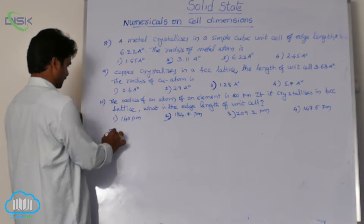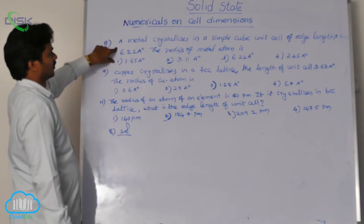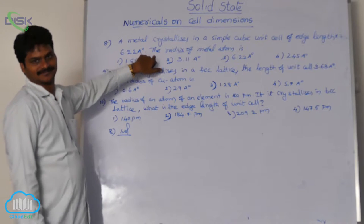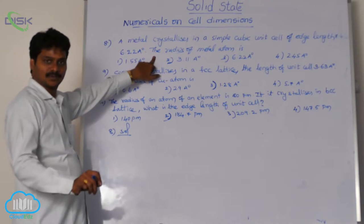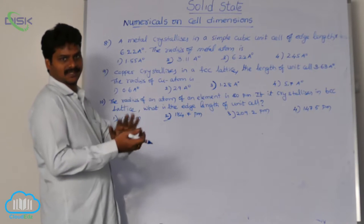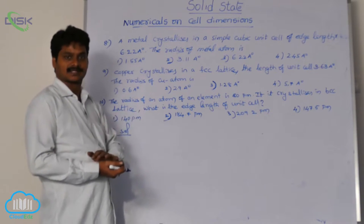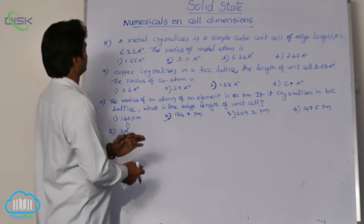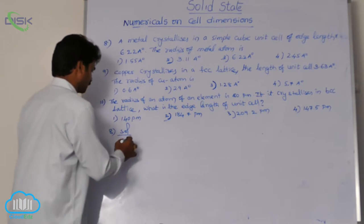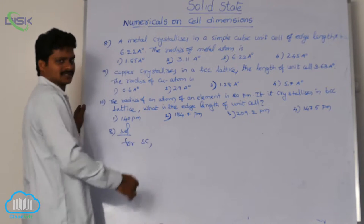See the solution for the 8th question. We are asked for the radius of the metal atom. In a simple cubic system, atoms at the corners are in touch with each other. So the formula for a simple cubic (SC) system applies here.